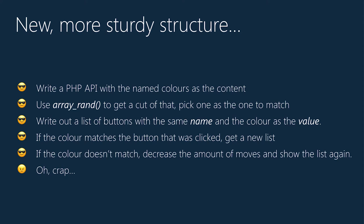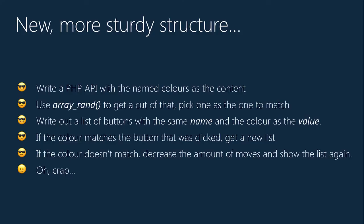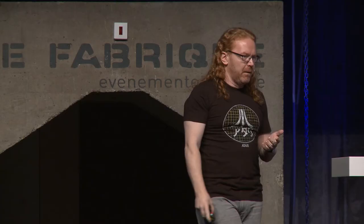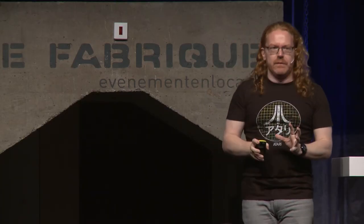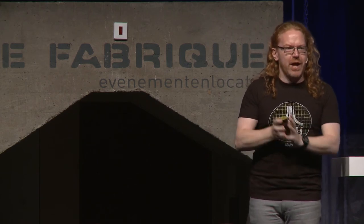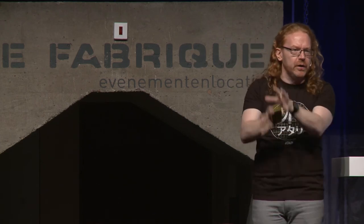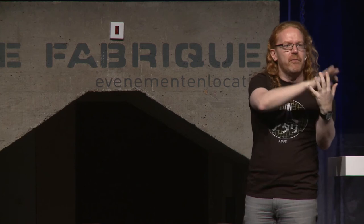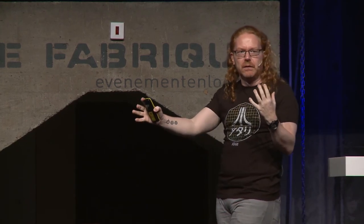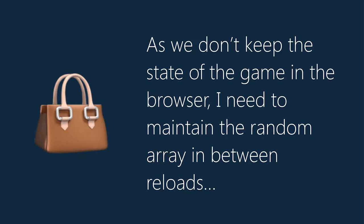I write out a list of buttons with the color name and color as the value, so when anyone clicks a button my REST parameters have the name that was clicked and its value. If the color matches the button that was clicked, I serve a new list — simple. If not, decrease the number of moves and show the list again. But then I realized there's a problem: can you spot it? The state of the game is not maintained anymore, because I have to push everything into a REST parameter, a cookie, or a database — I'm reloading the page every time a button is clicked because I'm not using JavaScript.